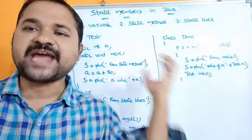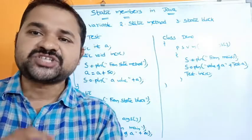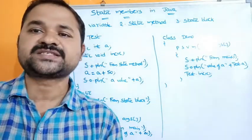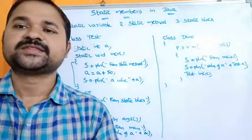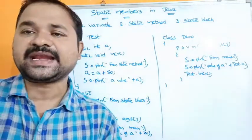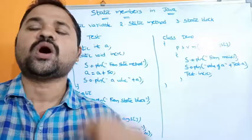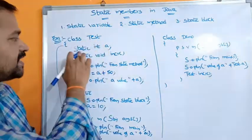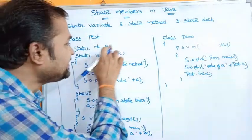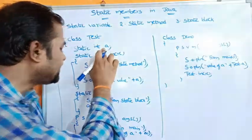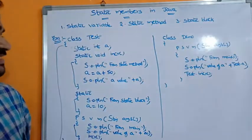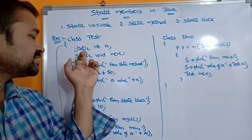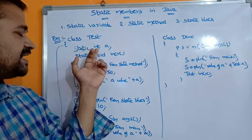First let's see what is a static variable. The variables which are declared inside a class but outside all the methods are known as static variables. That means static variables are declared inside a class but above all the methods. Let's take this example — the name of the class is Test. Here we have a static variable: static int a semicolon. This variable is declared above all the methods and inside the class.